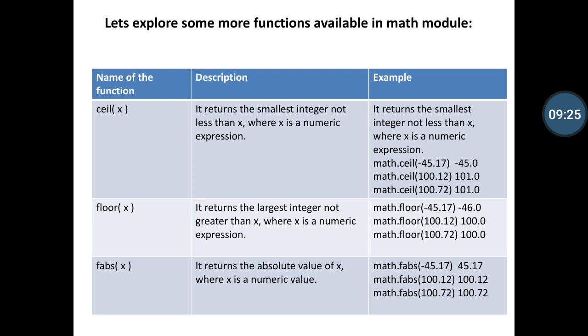And then after fabs function. It returns the absolute value of x where x is a numeric value. Math.fabs(-45.17). Then the argument executes and the result is 45.17.